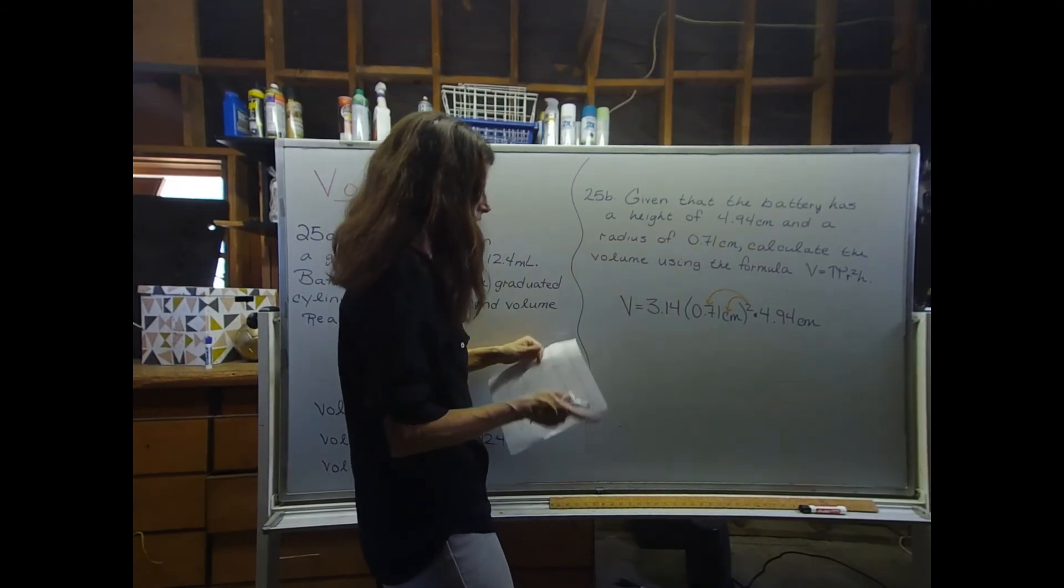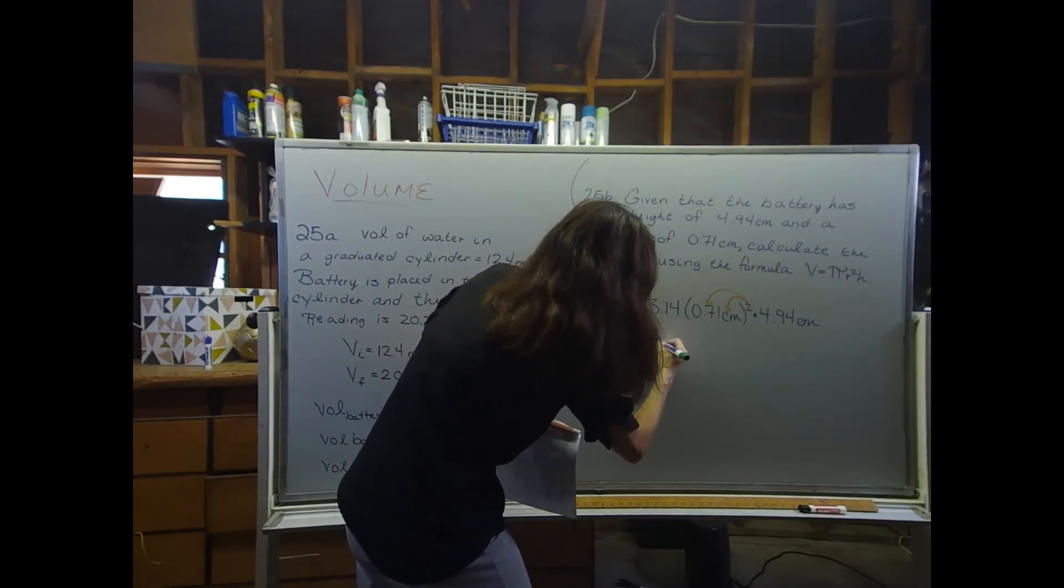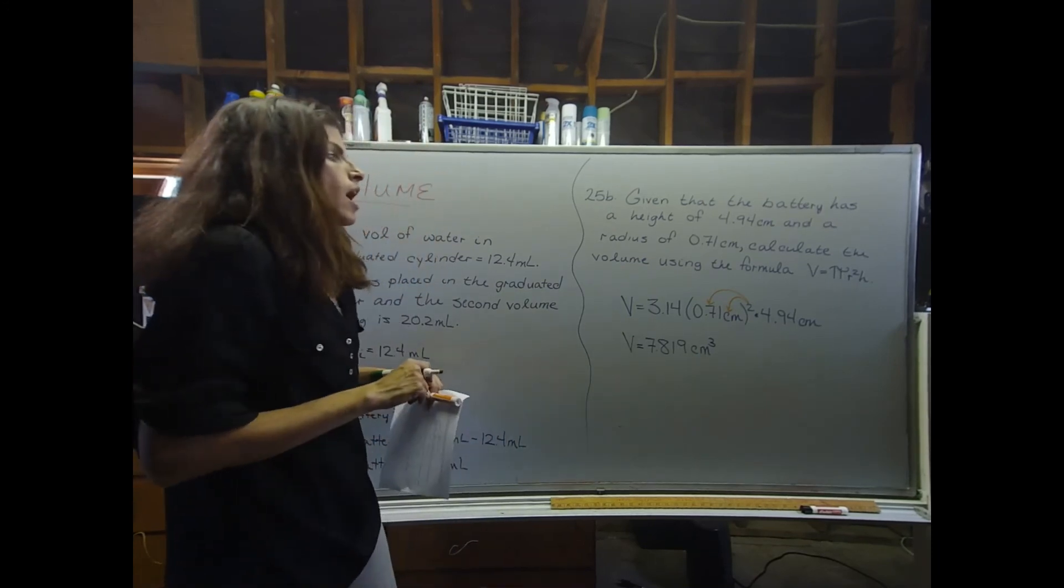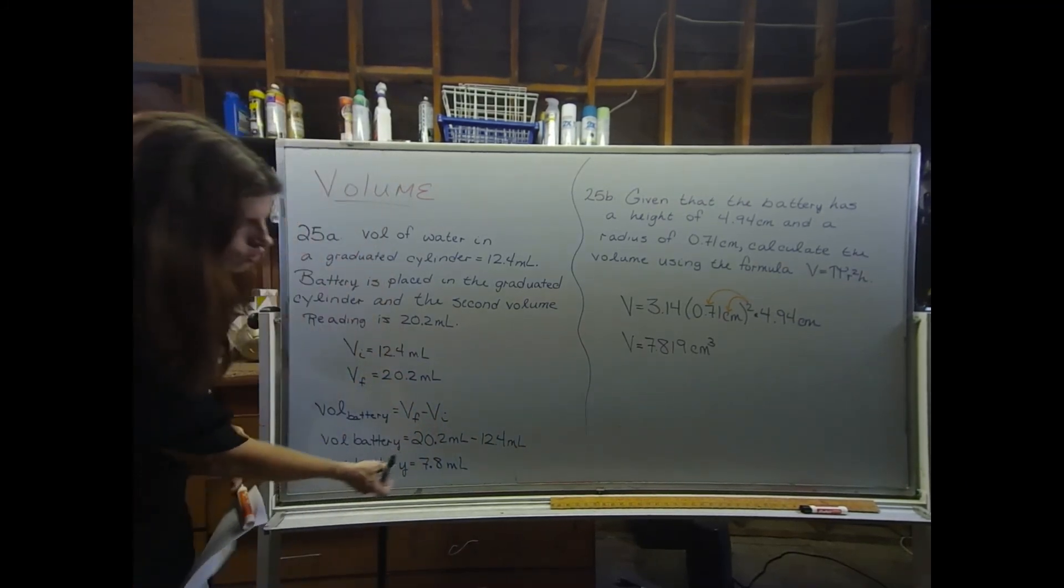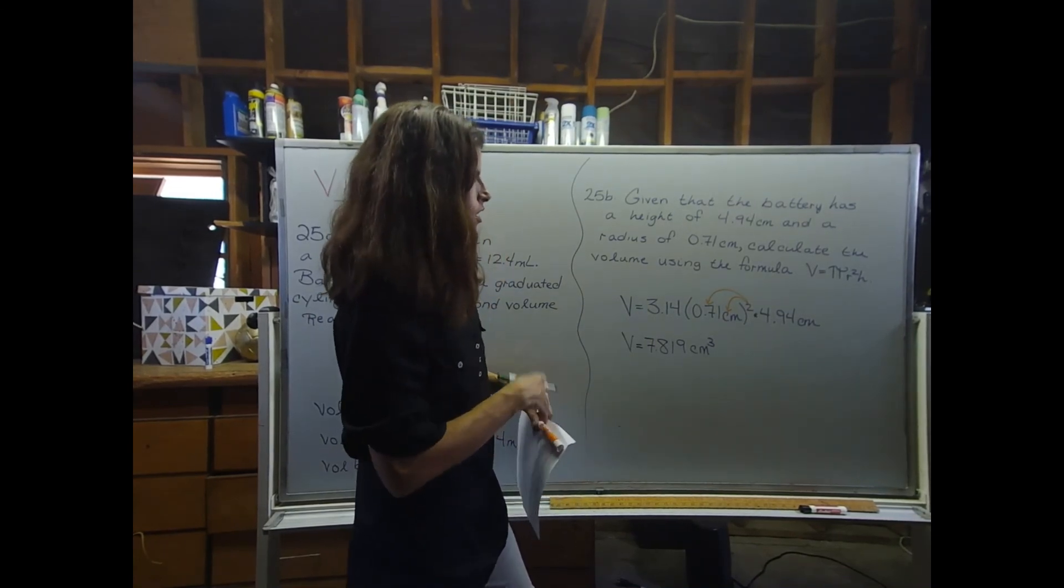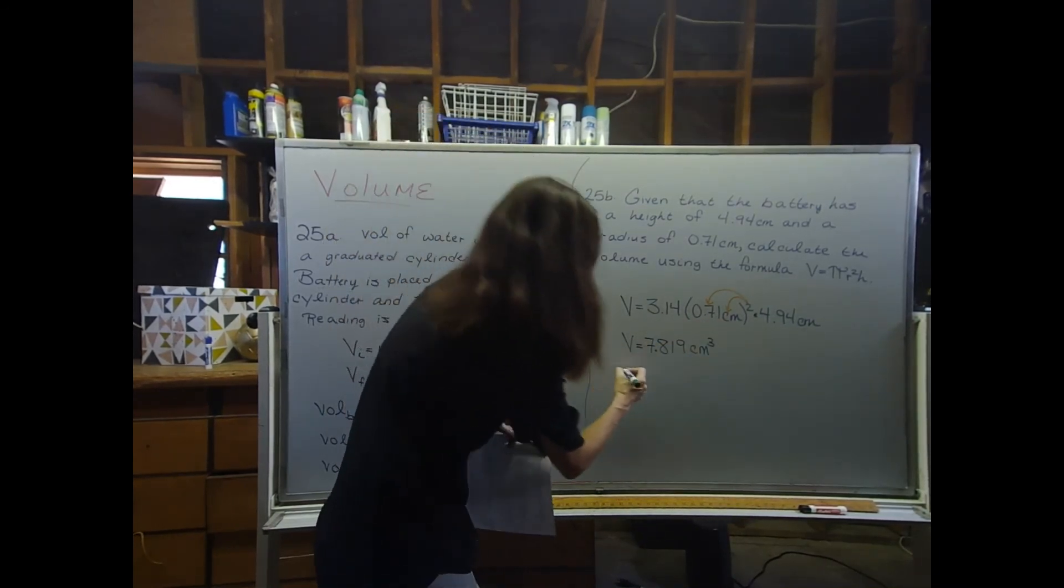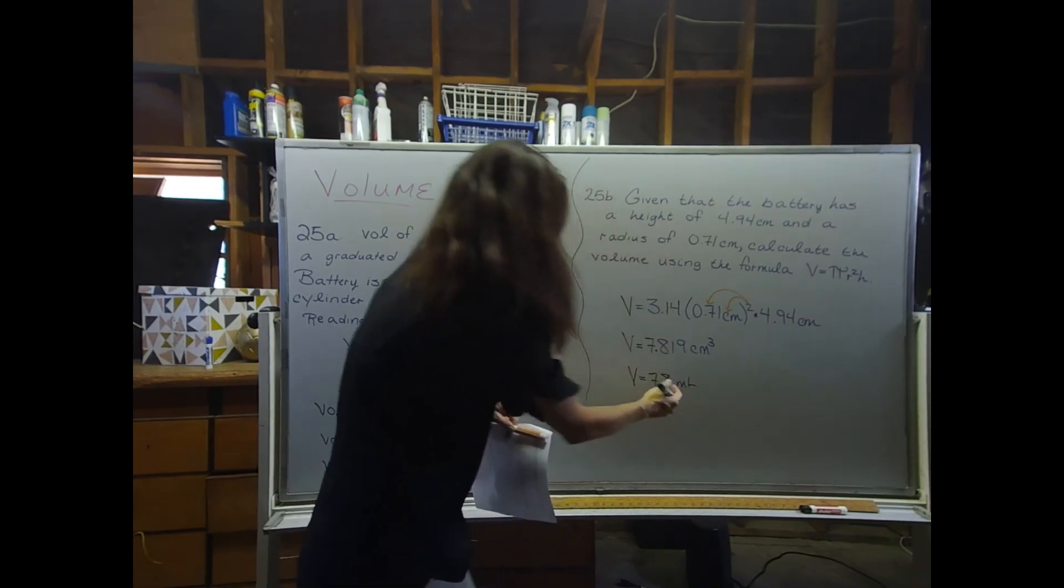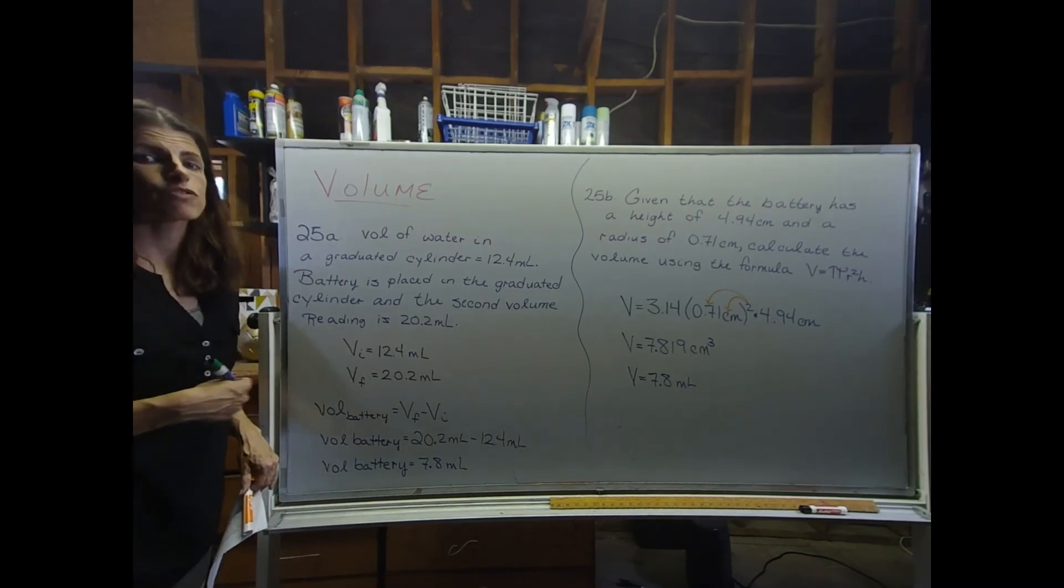When I did all of that, I got 7.819 centimeters cubed, because I had the centimeters squared times the centimeters. And it didn't tell me what units to use, but since I'm already in milliliters over here, I think I'm just going to change the centimeters cubed over to milliliters, so that the two numbers are comparable. And we also need to round to two sig figs because of the radius. So my final answer here is going to be 7.8 milliliters, which happens to be the same volume that we got over here. So either method works for calculating the volume of this battery.